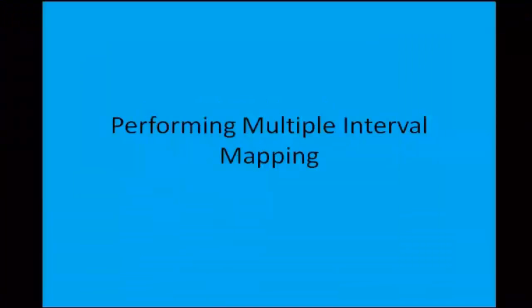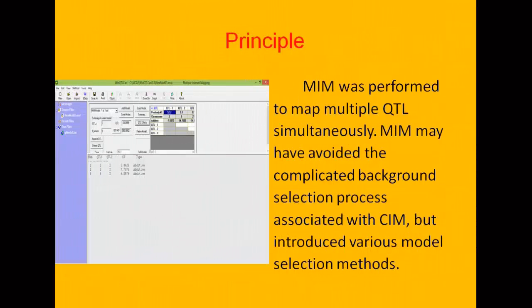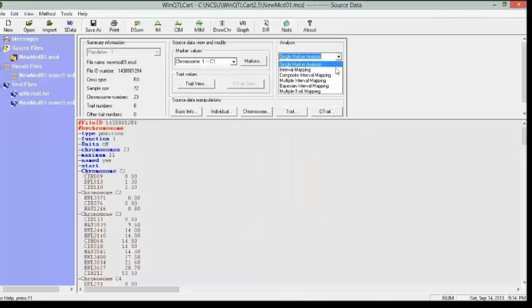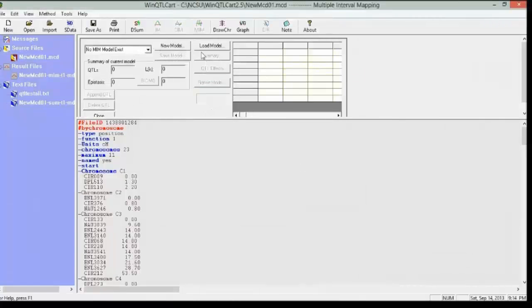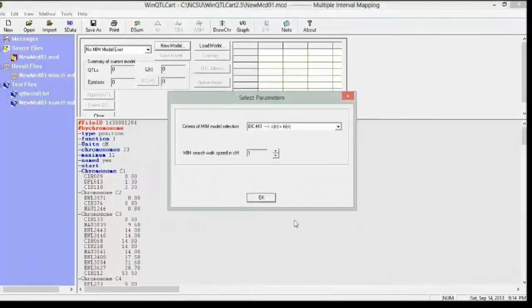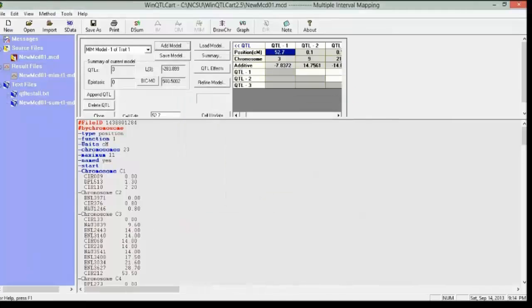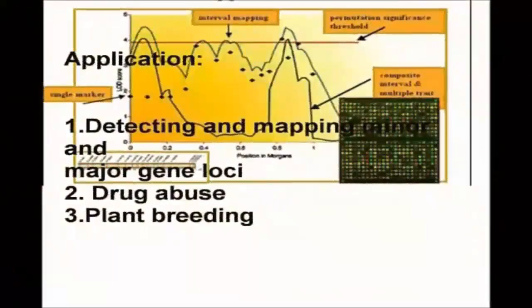Performing multiple interval mapping. The principle is multiple interval mapping was performed to map multiple QTLs simultaneously. MIM may have avoided the complicated background selection process associated with CIM but introduced various model selection methods. Select multiple interval mapping option from the drop-down menu and click OK. Choose MIM option in the dialog box. Click new model option. Keep the default parameters. A new model is created. By selecting QTL show, we can know the number of QTLs with additive effect.